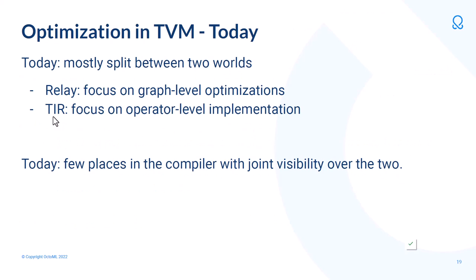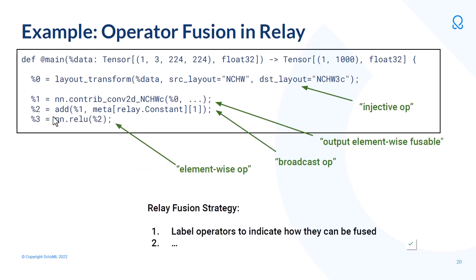Let's talk about optimization in TVM today, which is largely split between two worlds. In the Relay world we focus on graph-level optimizations, whereas optimizing operator-level implementations is done more in TIR. Although TIR backlinks to Relay, there are few places in the compiler with joint visibility over both. As an example, in operator fusion today we don't have any implementation information at the graph level, so to drive operator fusion generically we fall back to a set of labels — each operator is labeled with a kind field describing the rough characteristic of the implementation as it concerns fusion.